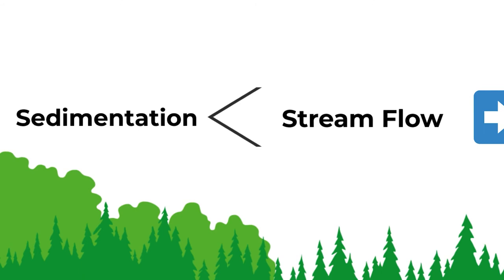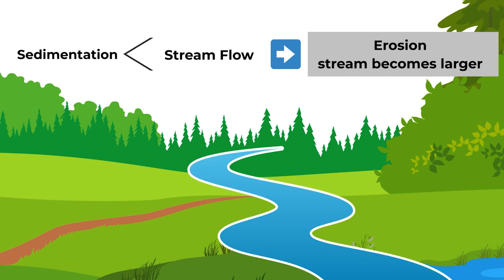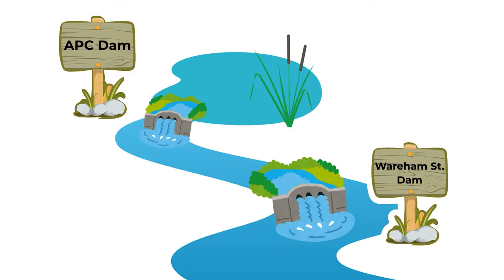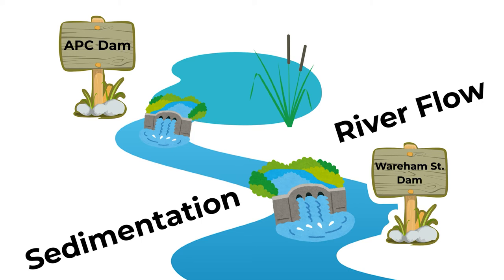Sedimentation and stream flow influence one another. When flow power is greater than what is necessary to transport the sediment load, the channel erodes, becoming larger. When flow power is less than what is necessary to transport the sediment load, the channel fills in, becoming smaller.